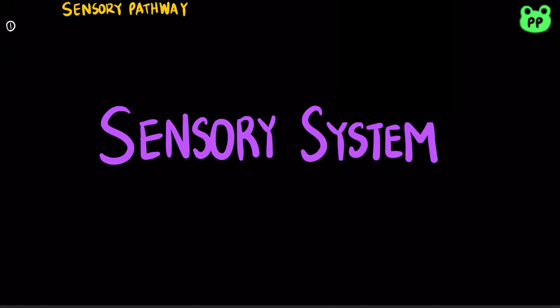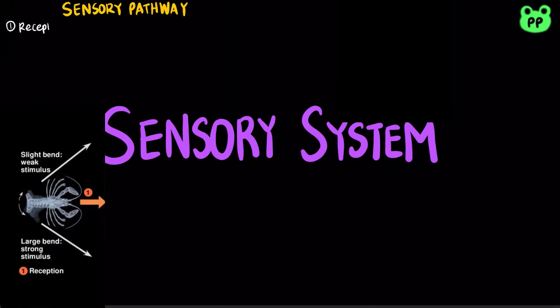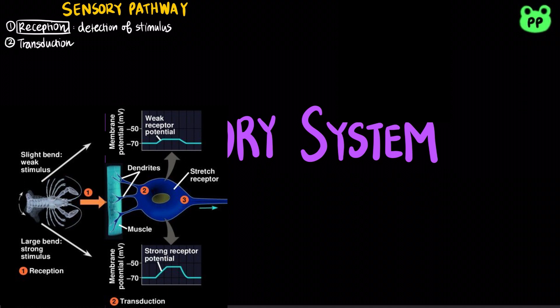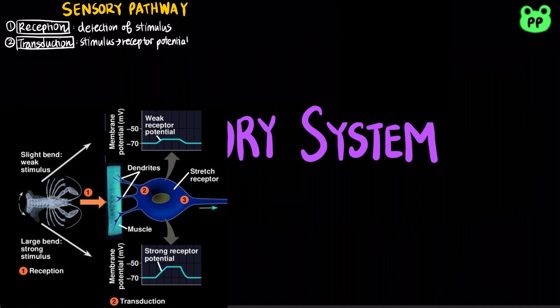Sensory pathways involve five main steps. The first step involves sensory reception, which is the detection of stimuli by sensory receptors. Next, sensory transduction involves the conversion of stimulus energy into a change in the membrane potential of a sensory receptor, which is known as the receptor potential.